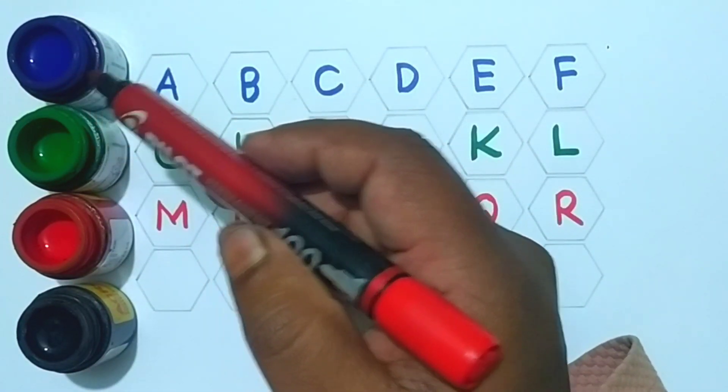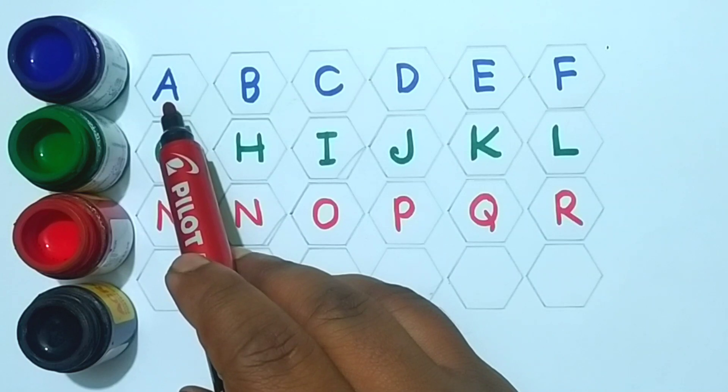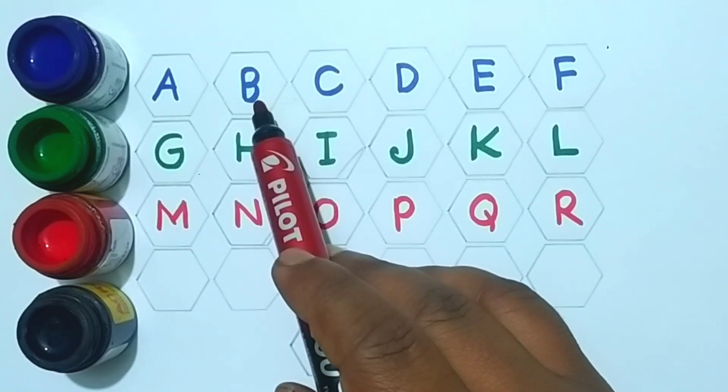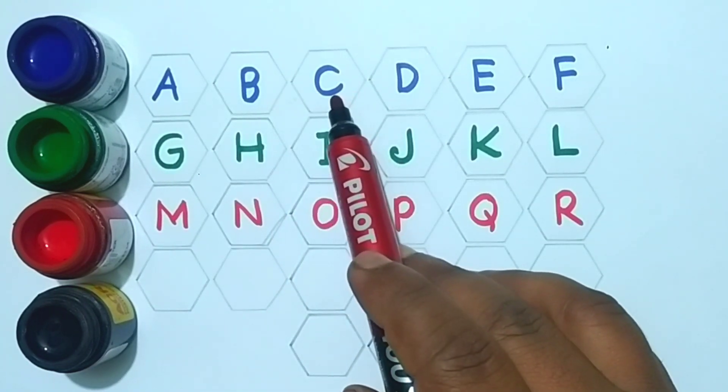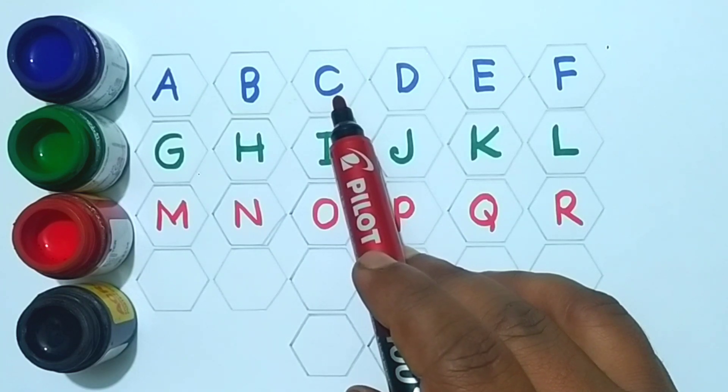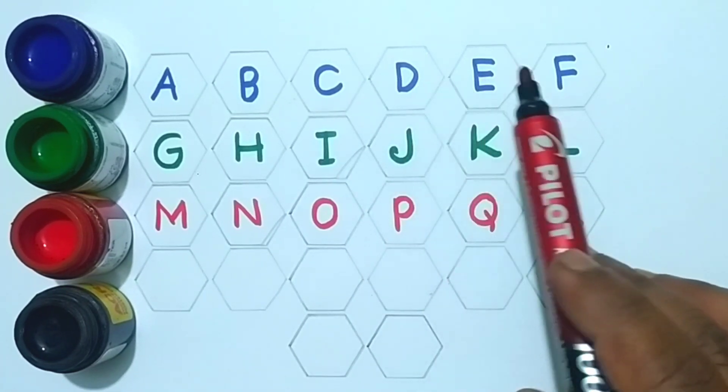Blue color. A for apple, B for bat, C for cat, D for dog.